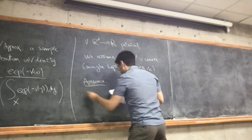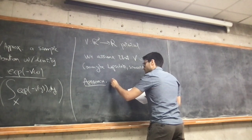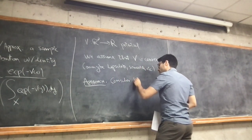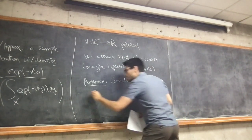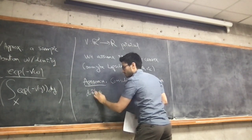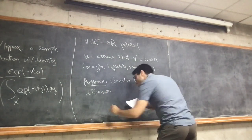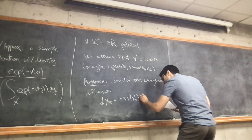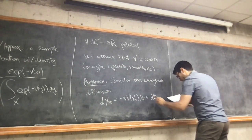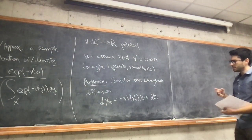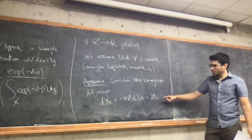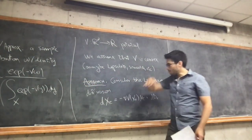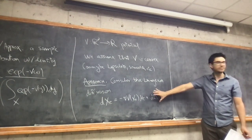The approach, at least in this reading group, is going to be to consider this Langevin diffusion, which is driven by this SDE: dX_t = minus gradient of v of X_t dt plus square root of 2 dB_t. What I want to prove today is that the stationary distribution of this dynamics is going to be exactly that density. The approach is: let's just run the Langevin diffusion for long enough and take the sample given by that.